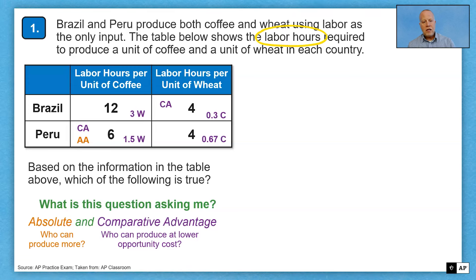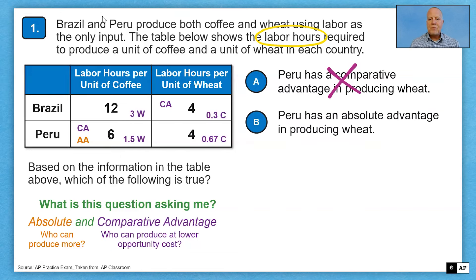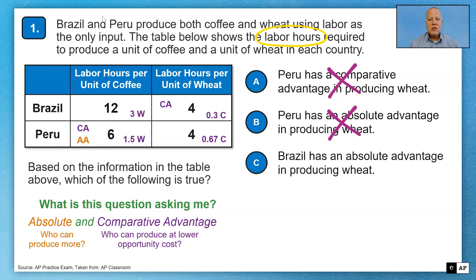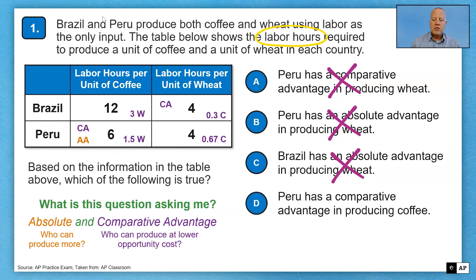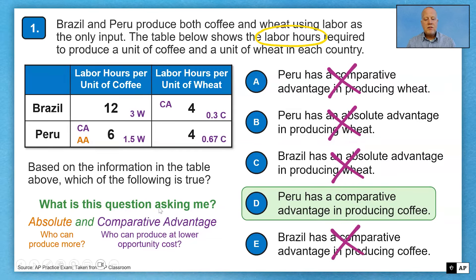Now I'm ready to look at the responses. Option A: Peru has comparative advantage in the production of wheat — not accurate. Option B: Peru has absolute advantage in the production of wheat — no. Option C: Brazil has absolute advantage in the production of wheat — no, no one had absolute advantage in wheat. Option D: Peru has comparative advantage in the production of coffee — yes, that matches our numbers. That's the correct answer. Option E: Brazil has comparative advantage in producing coffee — no. The correct answer is D. Take your time, define the problem, then work your way through the options.